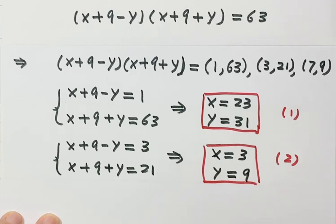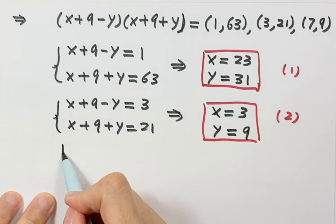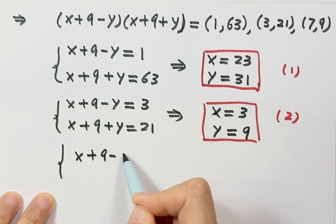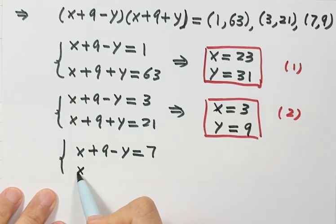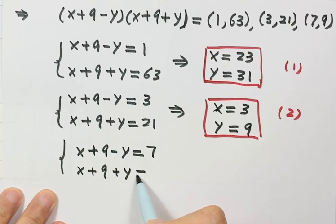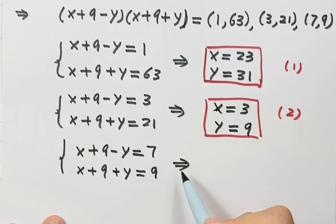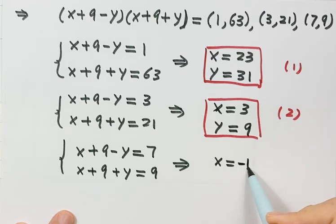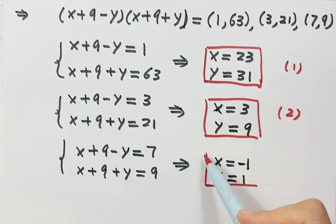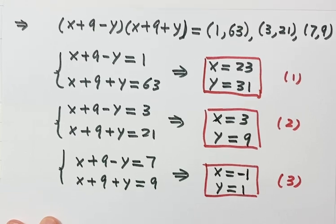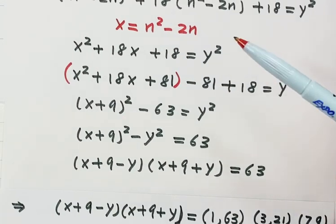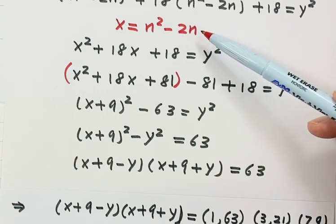Now let's see the third case. Here, x plus 9 minus y equals 7 and the second factor equals 9. Solving the system gives x equals negative 1 and y equals 1 — that is the third solution. Our goal is to solve for n. Recall we set x equals n squared minus 2n, so we're going to use this to solve for n.